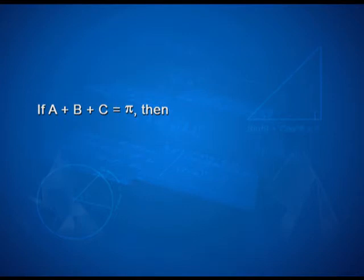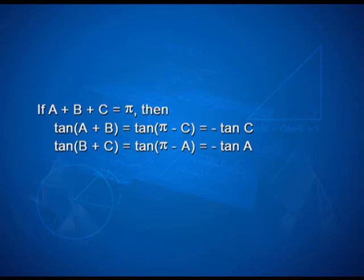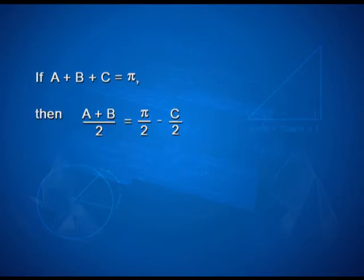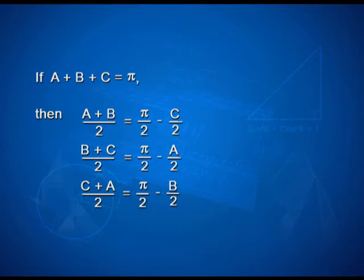If A plus B plus C equals pi, then tan of A plus B equals tan of pi minus C, which equals minus tan C. Tan of B plus C equals minus tan A. Tan of C plus A equals minus tan B. Also, A plus B over 2 equals pi over 2 minus C over 2; B plus C over 2 equals pi over 2 minus A over 2; and C plus A over 2 equals pi over 2 minus B over 2.